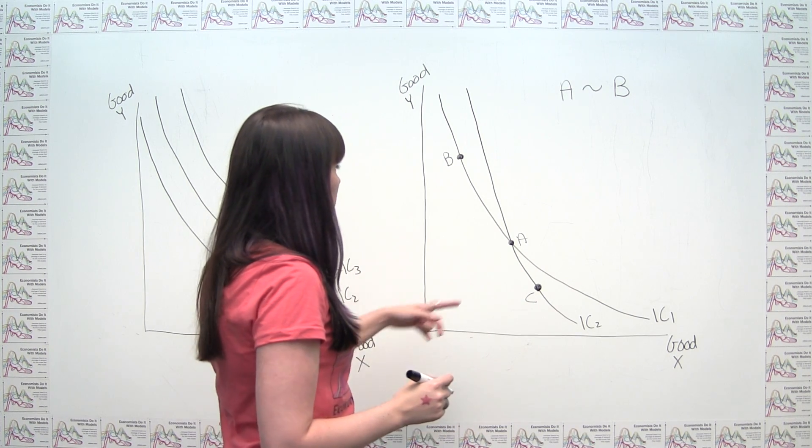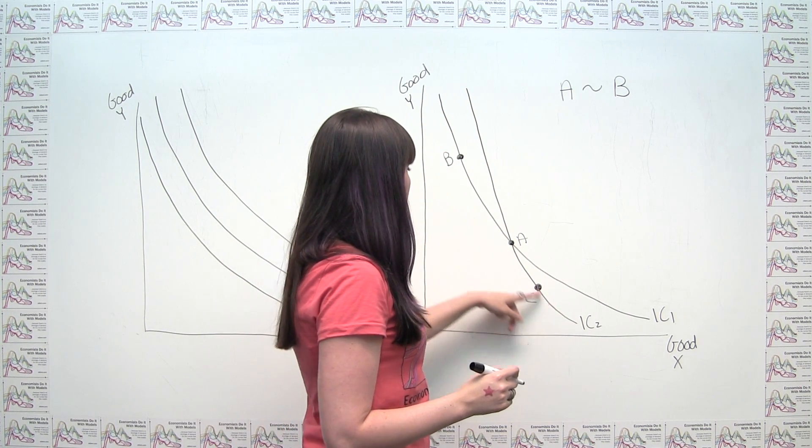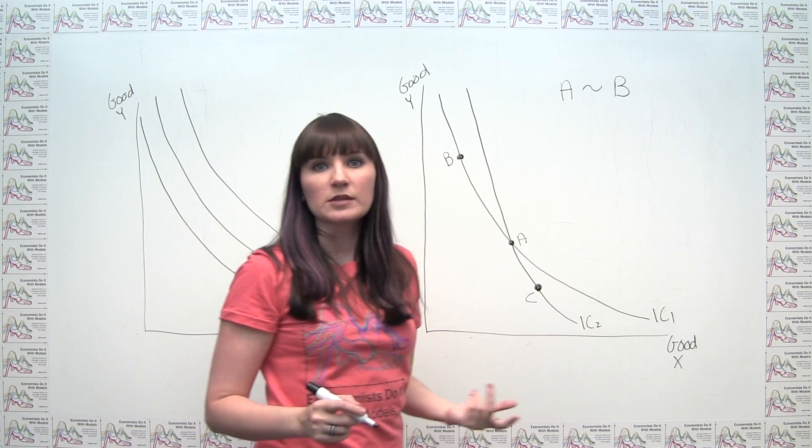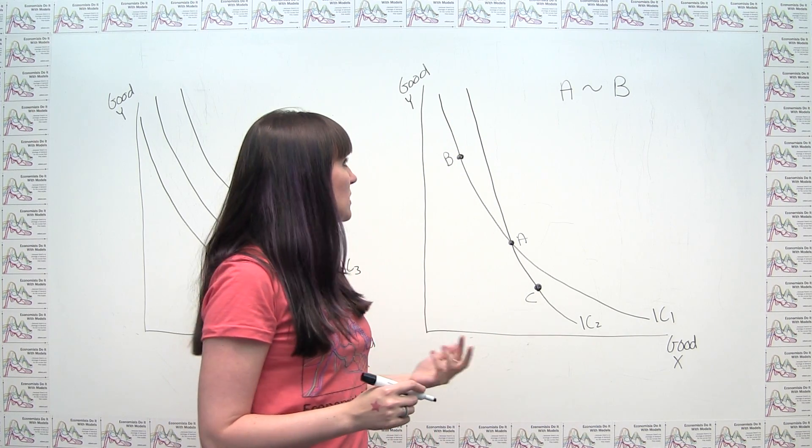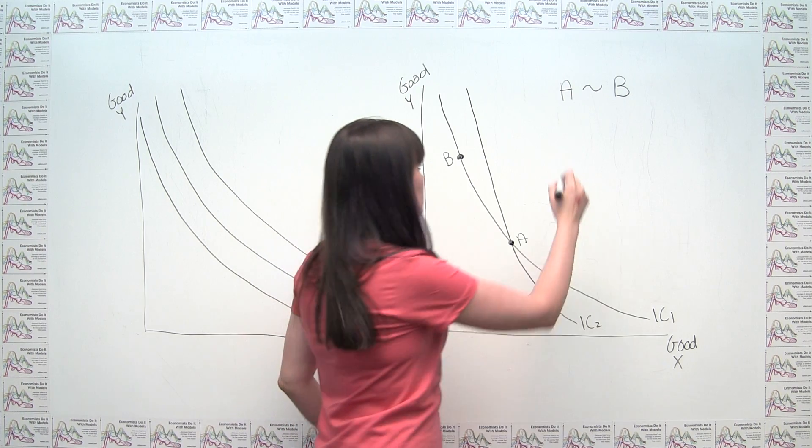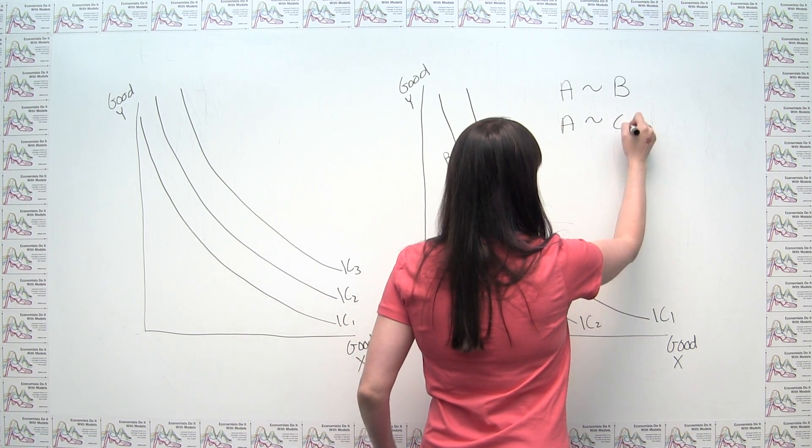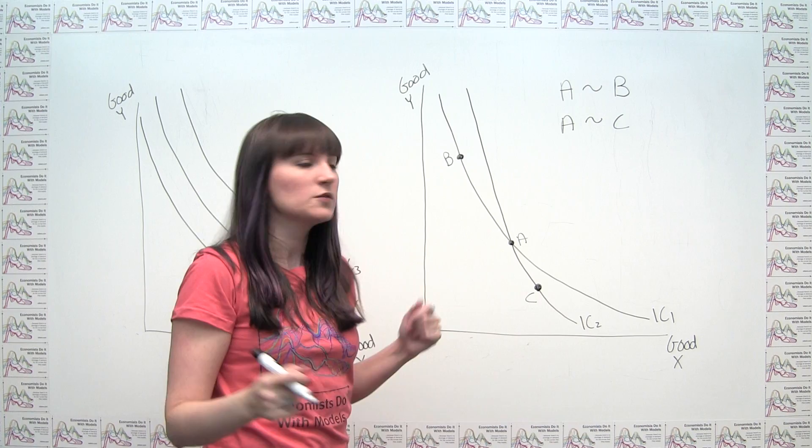We could do the same thing and we could notice that points A and C are also on the same indifference curve. So it must be true that the consumer is indifferent between A and C. So, easy enough so far.